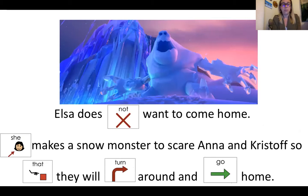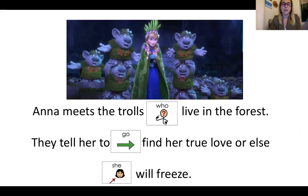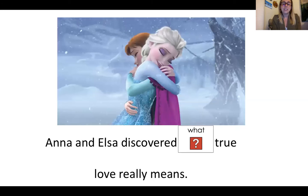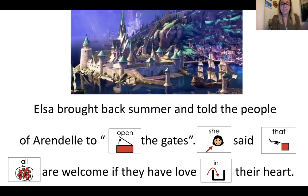Elsa does not want to come home. She makes a snow monster to scare Anna and Kristoff so that they will turn around and go home. Anna meets the trolls who live in the forest — they tell her to go find her true love or else she will freeze. An evil man named Hans tries to hurt Elsa, but it didn't work because good always defeats evil. Anna and Elsa discovered what true love really means. Elsa brought back summer and told the people of Arendelle to open the gates, saying that all are welcome if they have love in their heart.